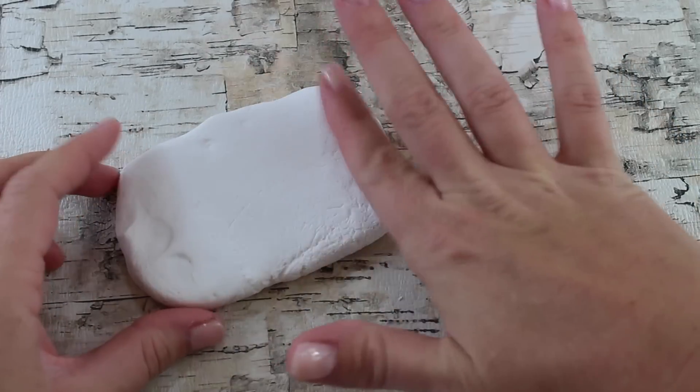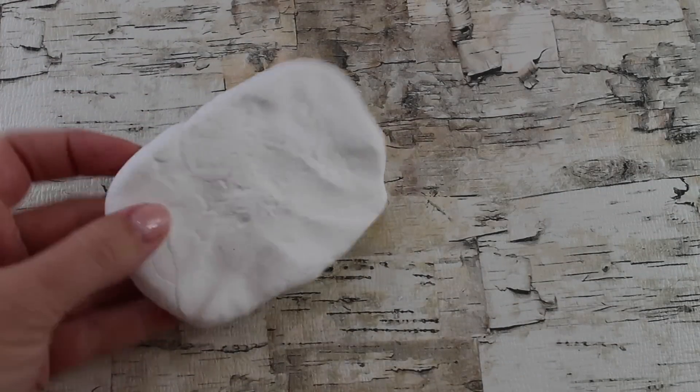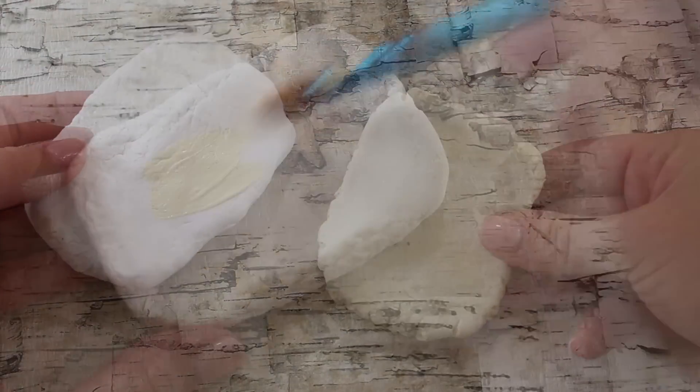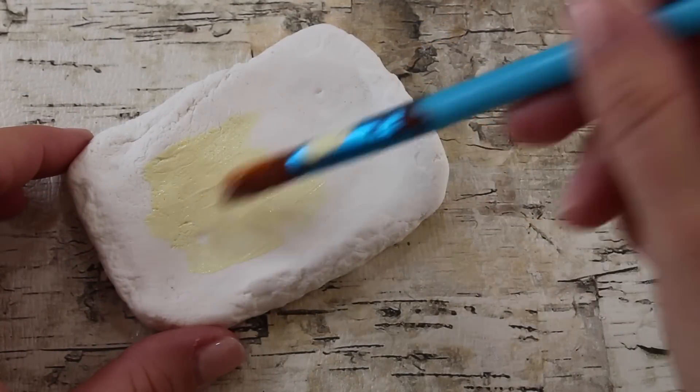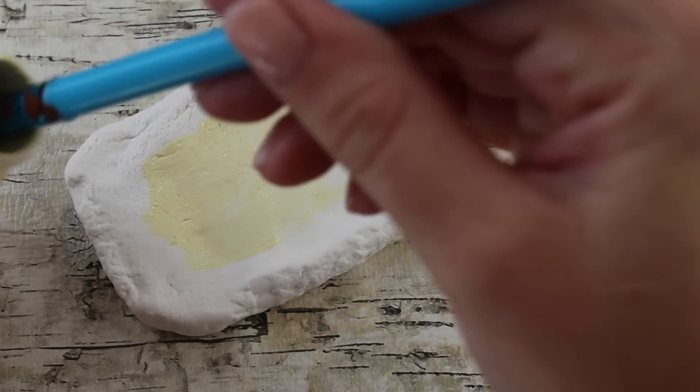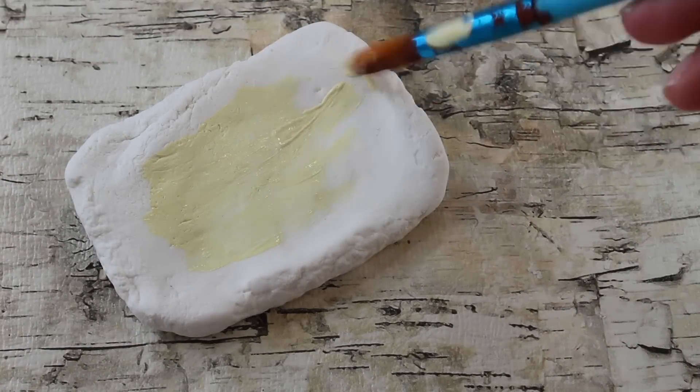You can also take a toothbrush to it if you want it to look more like the American Girl dough. And then just let it air dry. Once it's dried, you can paint it the color of your choice. You can leave it white, or you can paint it a creamy color, or you can even do rainbow if you're having rainbow cookies.